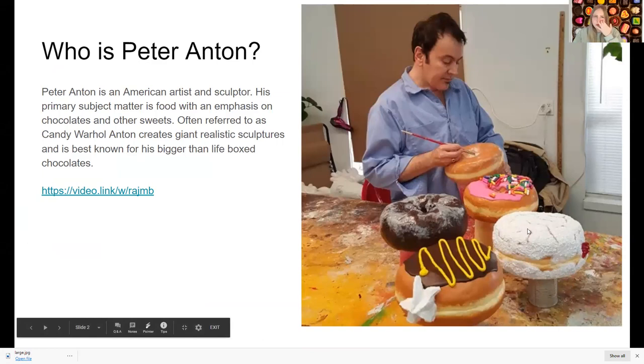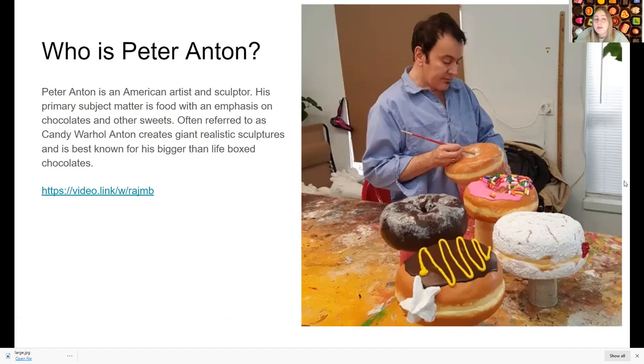So who is Peter Anton? Well, it's this guy right here. Peter Anton is an American artist and a sculptor. His primary subject matter is food with an emphasis on chocolates and other sweets. Often referred to as Candy Warhol, Anton creates giant realistic sculptures and is best known for his bigger-than-life boxed chocolate, like the ones behind me. Now, here's a video link that I want you guys to watch. It's a video of him making his artwork. So that'll be attached on Seesaw right after this video. So make sure you watch it.